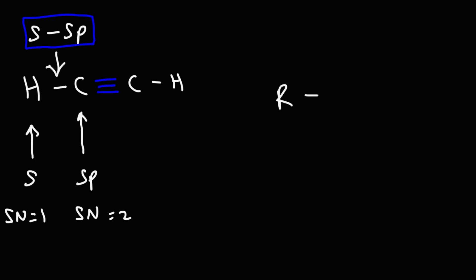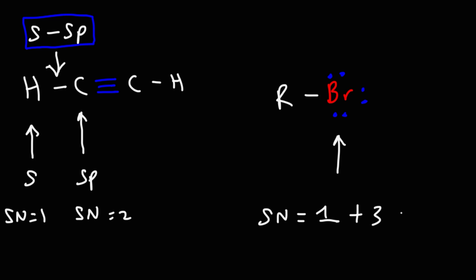Let's consider an alkyl halide. What is the steric number and hybridization of the bromine atom? The bromine atom has one sigma bond and three lone pairs, giving a steric number of 4, so the hybridization is sp3. Now you know the relationship between steric number and hybridization, and how to find the steric number in a molecule.